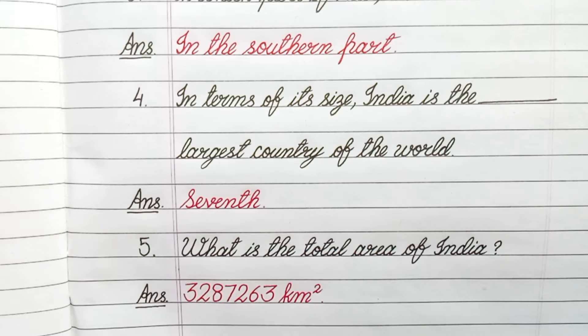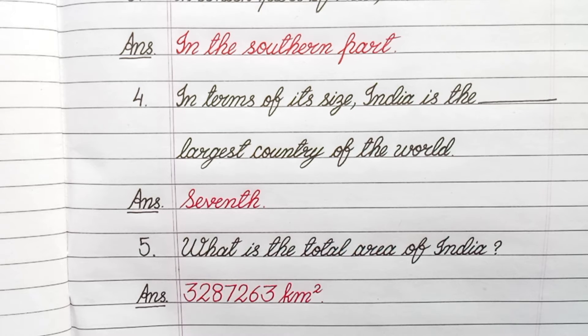Question number 5: What is the total area of India? Answer: 3,287,263 km².